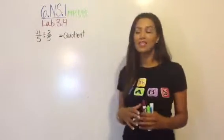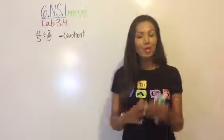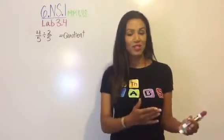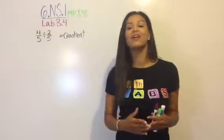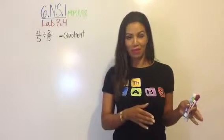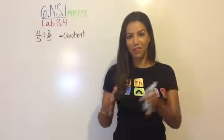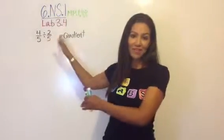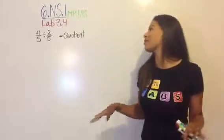But let's look at today's problem. Open up your lab books to lab 3.4 and read the objective in your head as I read it aloud. I can use a visual model to find quotients of fractions. Namely, a fraction divided by a fraction.